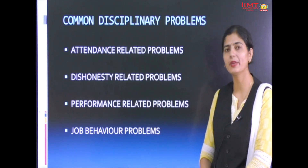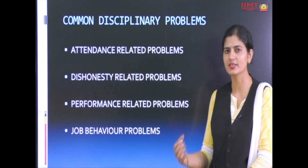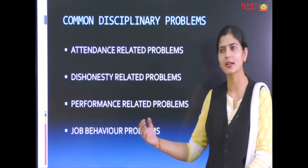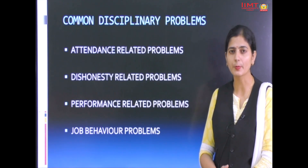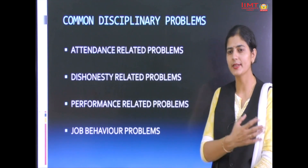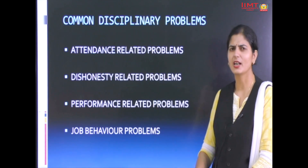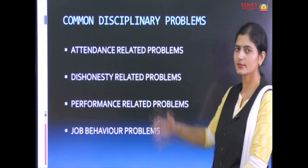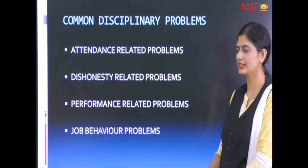Next comes job behavior problems. When employees are on the job, they behave in unacceptable ways such as beating others, smoking, sleeping during working hours, insubordination, fighting among employees, physical assault, or abusing others. All these come under job-related behavior problems. These are the major indiscipline problems that arise within an organization.